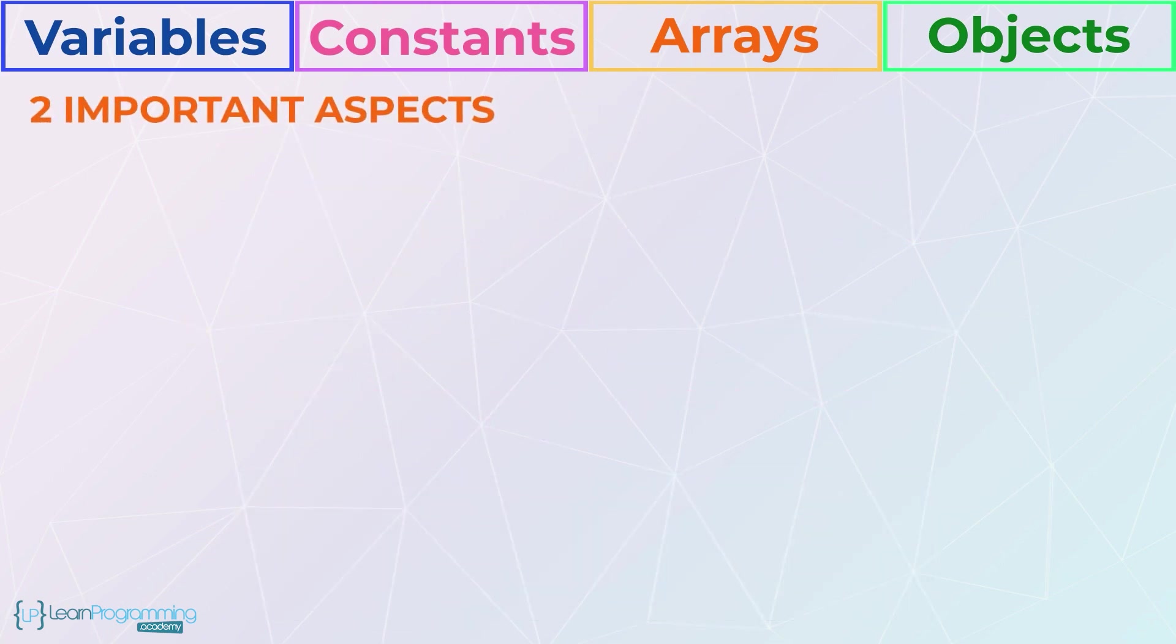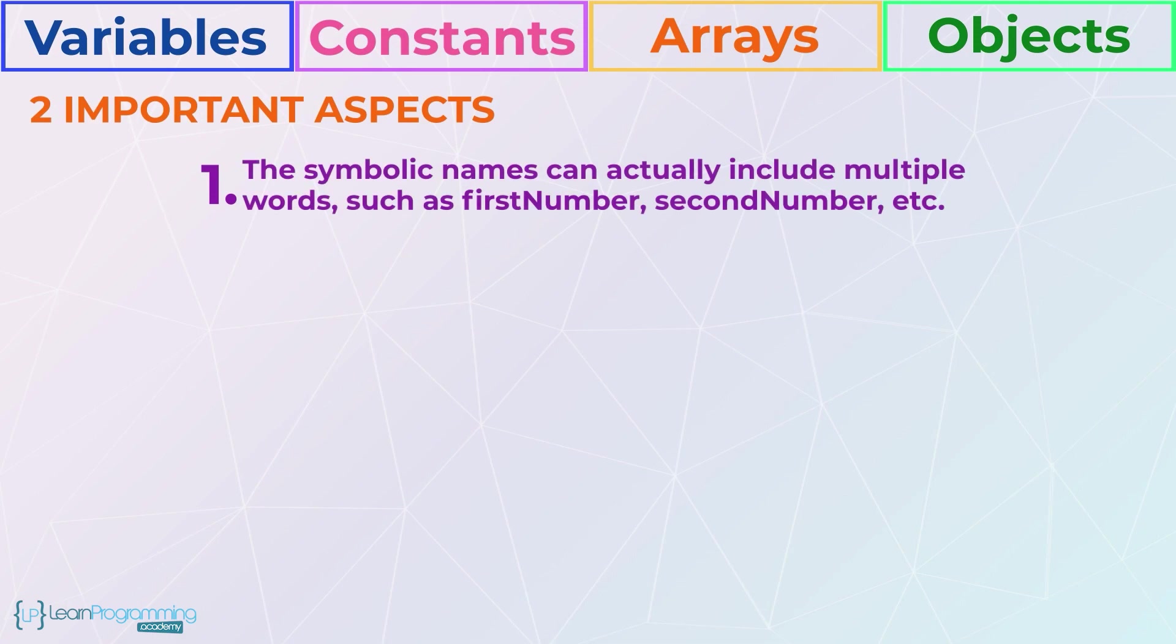Two important aspects of what I've shared so far is that one, notice the symbolic names can actually include multiple words such as first number, second number etc.